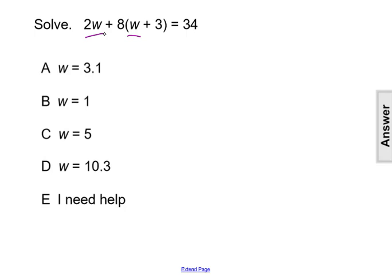Because we want to be able to combine it with the other term of 2w, but we can't do that until we get rid of the parentheses. So we're distributing the 8 to the w and the plus 3. That will give us 2w plus 8w plus 24 equals 34.